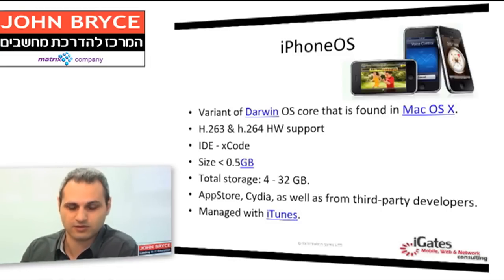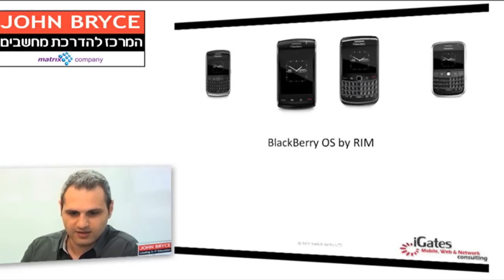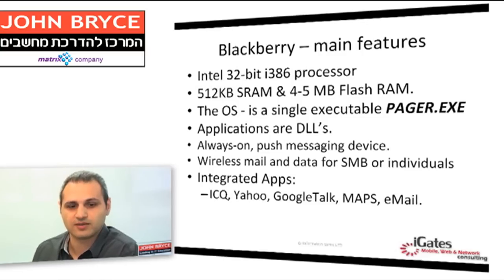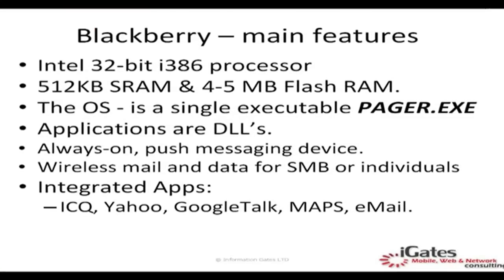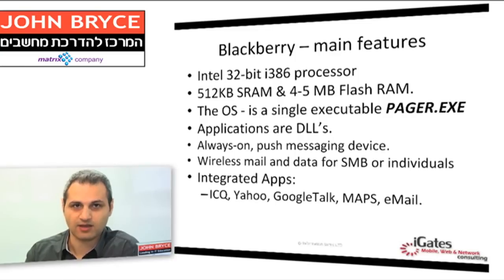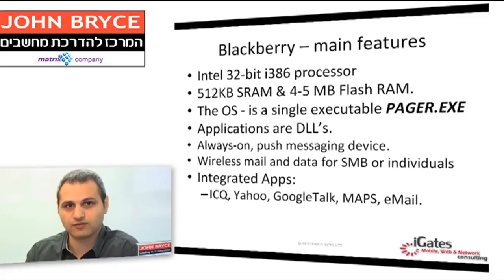Next is BlackBerry. The main features of BlackBerry are similar to any other J2ME phone, since BlackBerry uses Java Micro Edition and must meet J2ME requirements. It comes with a 32-bit i386 processor, at least half a megabyte of RAM, and four to five megabytes of SRAM. The whole OS runs inside a single executable. Applications inside the BlackBerry are DLLs — dynamically loaded libraries — compiled from Java.